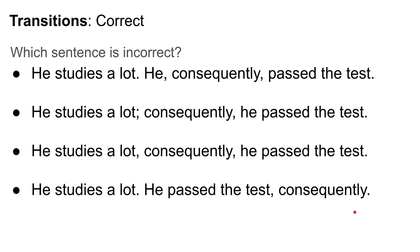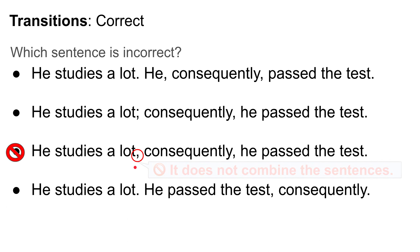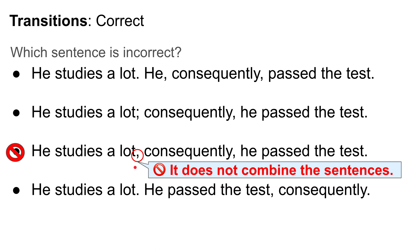Take about 10 seconds and read these sentences — they all have the same idea, but one is incorrect. The incorrect sentence is the third one. The reason it's incorrect is because all the other sentences have a period or a semicolon between both sentences, but the third one has only a comma. This is called a comma splice. This mistake happens because the writer assumed that 'consequently' can combine sentences. But remember, transitions don't combine sentences.